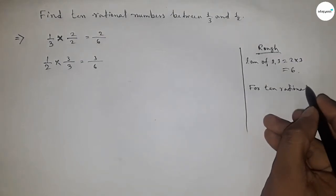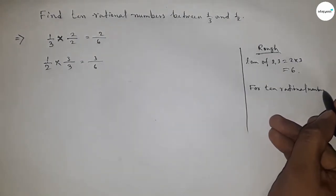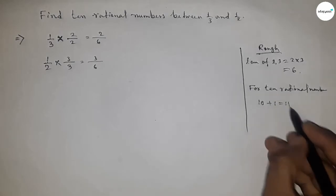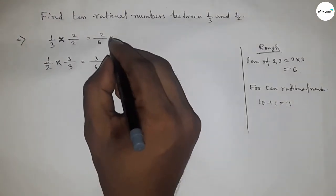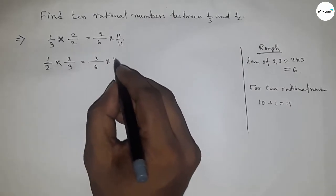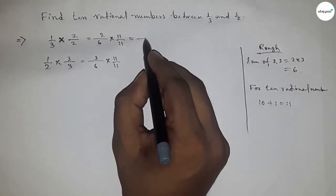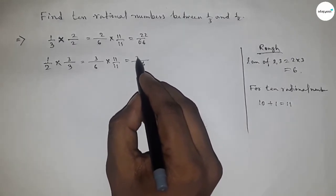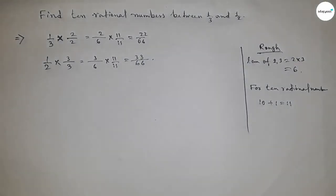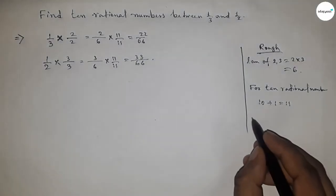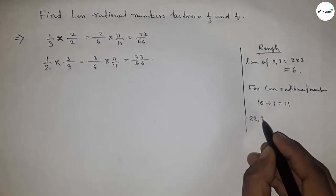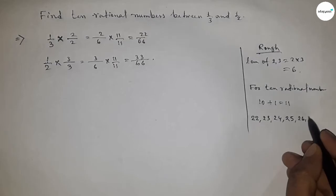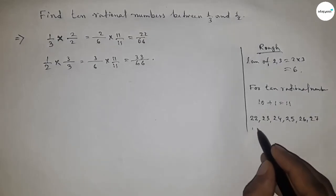Now to find 10 rational numbers, we follow a method: we multiply by (10+1), which is 11, so 11/11. This gives us 2/6 × 11/11 = 22/66 and 3/6 × 11/11 = 33/66. So between 22 and 33, those are the numbers we need.